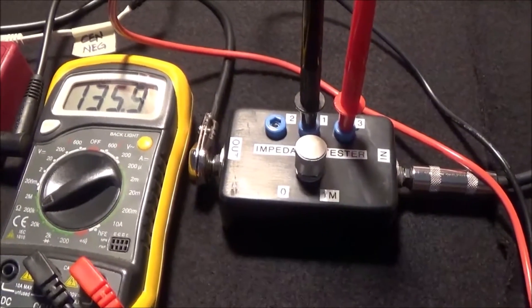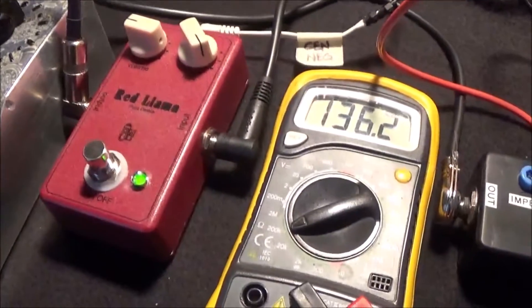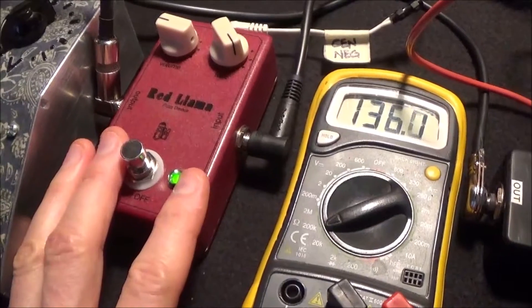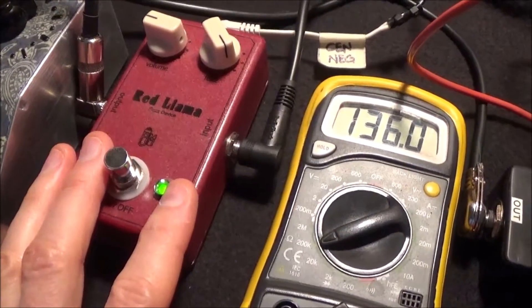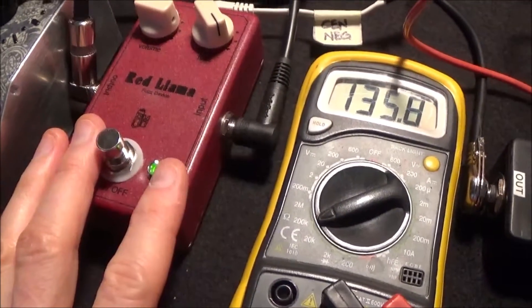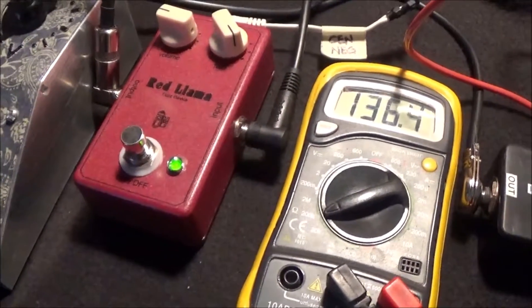In Craig's book, he says that if you have anything less than 100K, you should consider putting a buffer in. I never tested this before. I'm actually a little surprised that this is only 150K, but if you have true bypass it doesn't really matter.